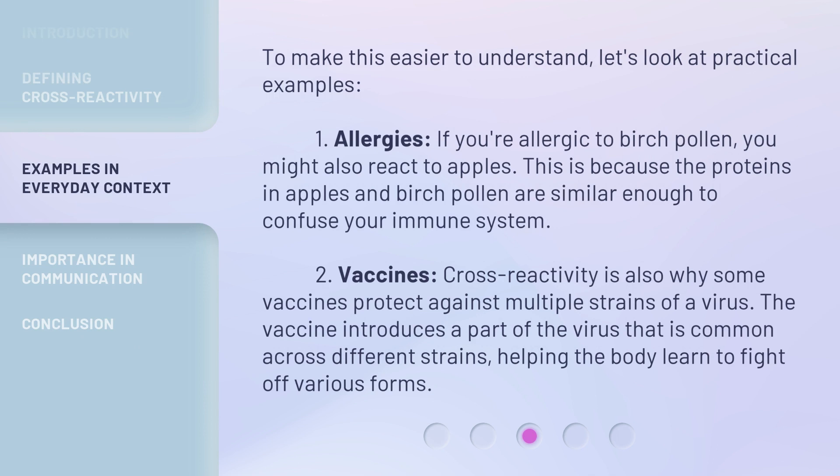To make this easier to understand, let's look at practical examples. First, allergies: if you're allergic to birch pollen, you might also react to apples. This is because the proteins in apples and birch pollen are similar enough to confuse your immune system. Second, vaccines: cross-reactivity is also why some vaccines protect against multiple strains of a virus. The vaccine introduces a part of the virus that is common across different strains, helping the body learn to fight off various forms.